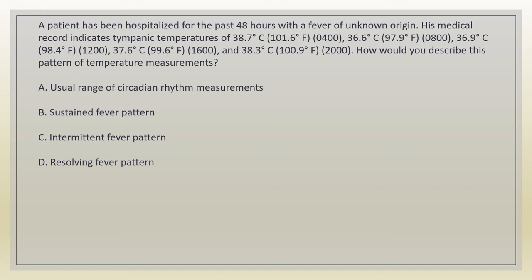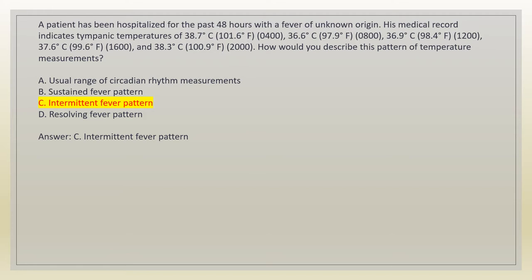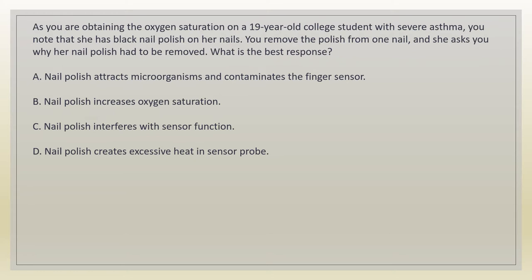A patient has been hospitalized for the past 48 hours with a fever of unknown origin. His medical record indicates tympanic temperatures of 38.7°C (101.6°F) at 0400, 36.6°C (97.9°F) at 0800, 36.9°C (98.4°F) at 1200, 37.6°C (99.6°F) at 1600, and 38.3°C (100.9°F) at 2000. How would you describe this pattern of temperature measurements? A. Usual range of circadian rhythm measurements. B. Sustained fever pattern. C. Intermittent fever pattern. D. Resolving fever pattern. Answer: C. Intermittent fever pattern.